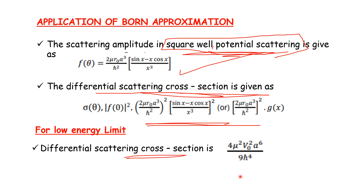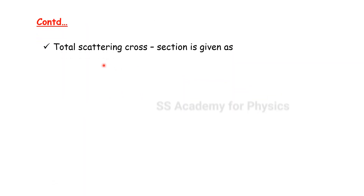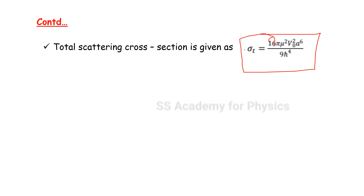For the low energy limit, when kR is much less than 1, the differential scattering cross section formula simplifies. The value is: (4μ²V₀²a⁶) / (9ℏ⁴). Then the total scattering cross section for the low energy limit gives a value of 16π times that expression — this is a key formula to remember.